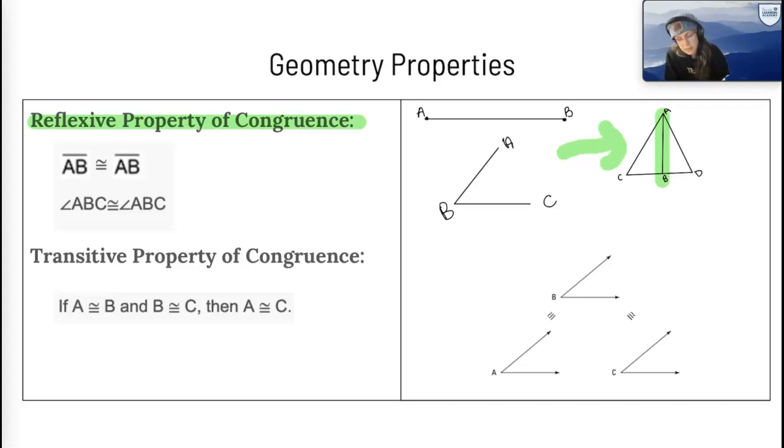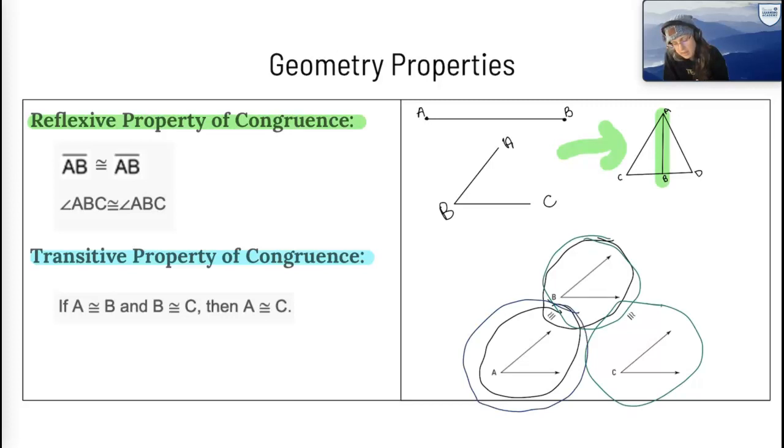Now, transitive property of congruence. What does that mean? This is where substitution comes in for us in geometry. So if angle A is congruent, meaning the same size and the same shape, to angle B, and angle B is congruent to angle C, then we know that angle A is congruent to angle C.